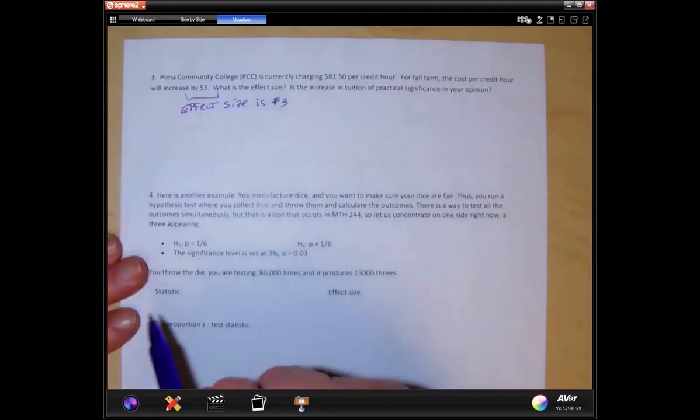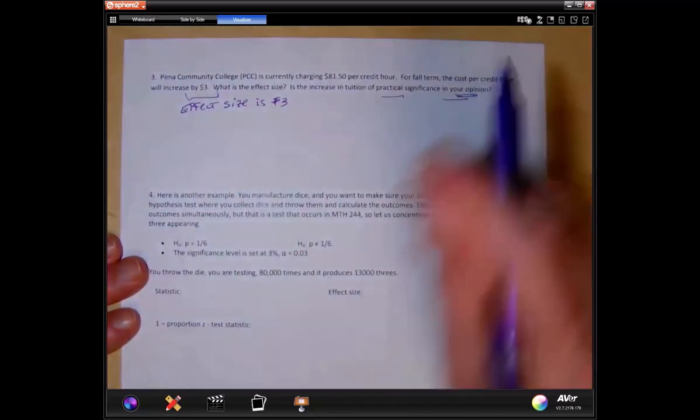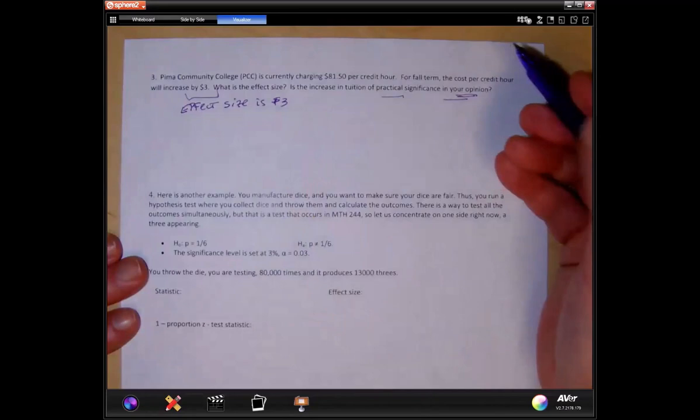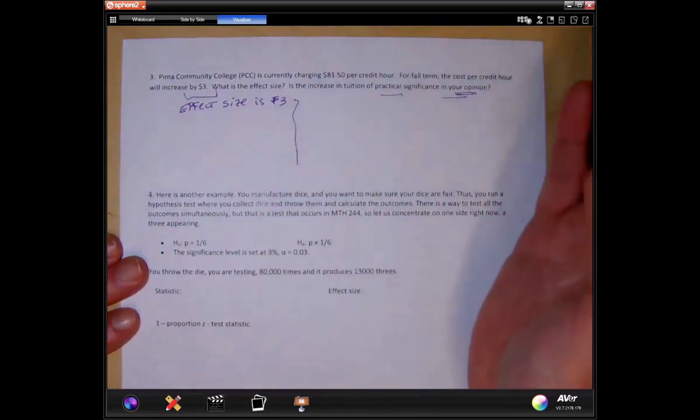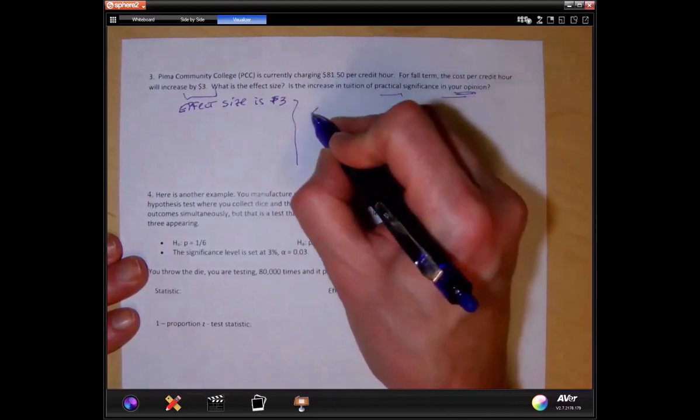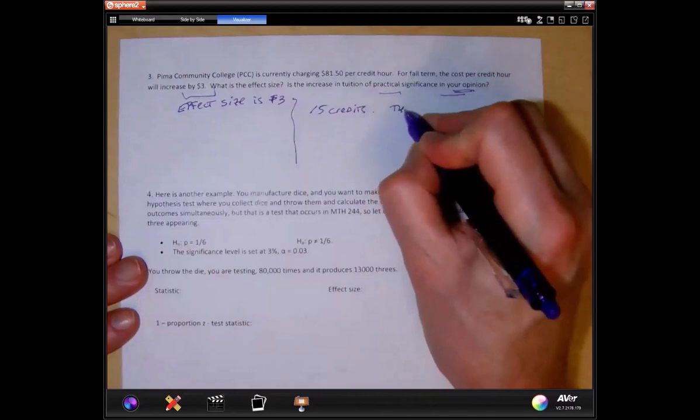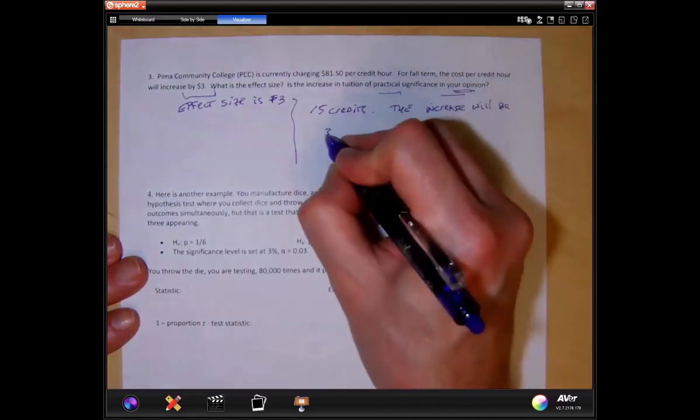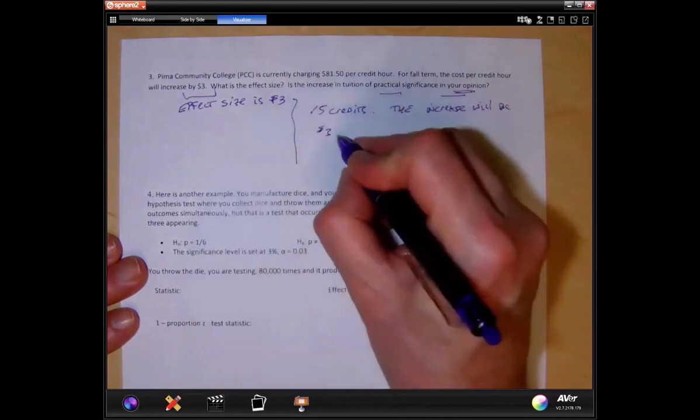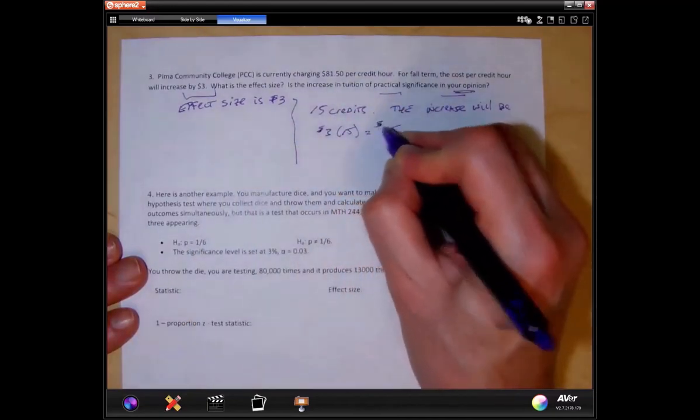Is the increase in tuition of practical significance in your opinion? This is a key word: in your opinion. So this is $3 per credit hour based on your situation. Let's figure it out. If you're taking 15 credits, the increase will be $3 per credit hour. So $3 times 15, that's a $45 increase.